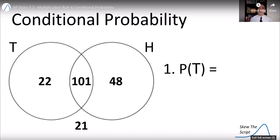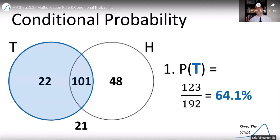So let's find the probability of selecting a tall man from the data set. So we find the whole circle and we get all the tall people, the people who are tall but not high income or people who are both, add them up, divide by the total sample size, 192, we get 64.1%.